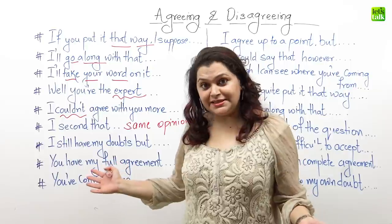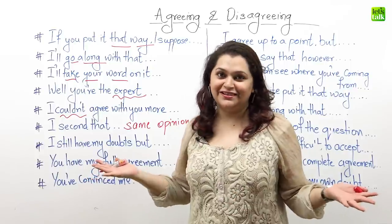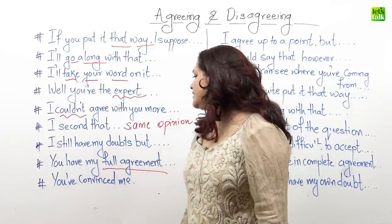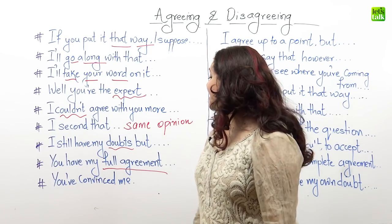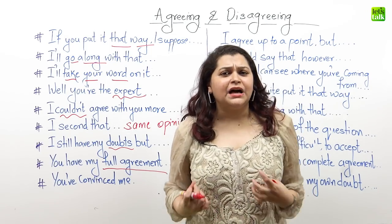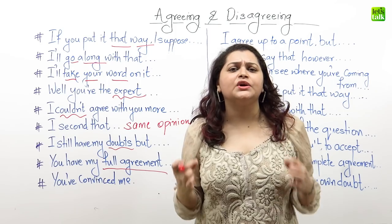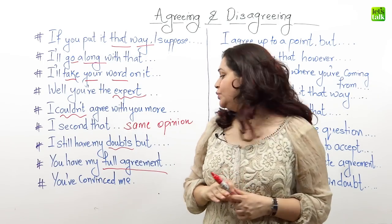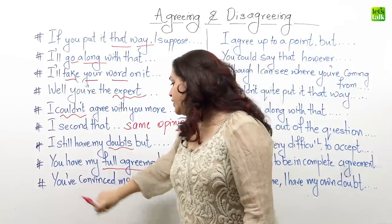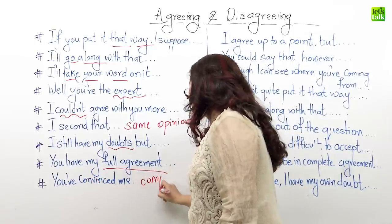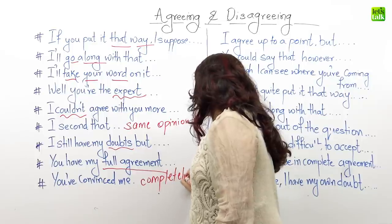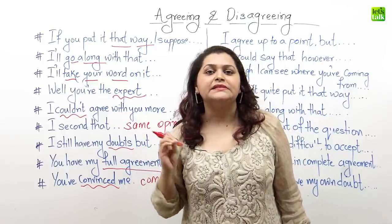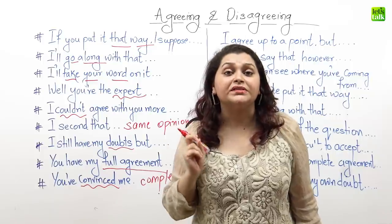Moving on, in those rare cases when Sally and Dan totally agree with each other, that's when Sally can say 'you have my full agreement,' which means there are no doubts. And lastly, if Dan comes up with absolutely valid and correct points and Sally has been won over by his argument, she can say 'well, you have convinced me' or 'you have completely convinced me.' The word 'convinced' here stands for Sally being in total agreement with Dan's views.